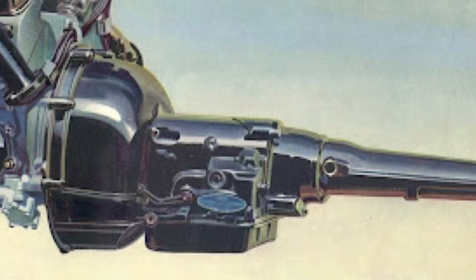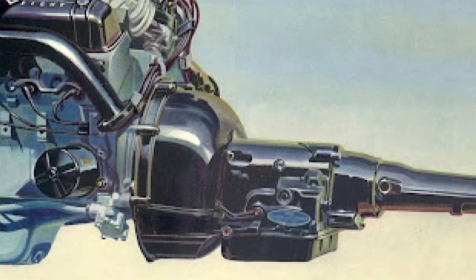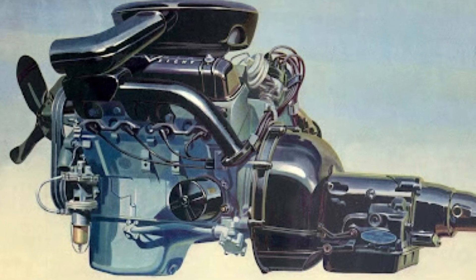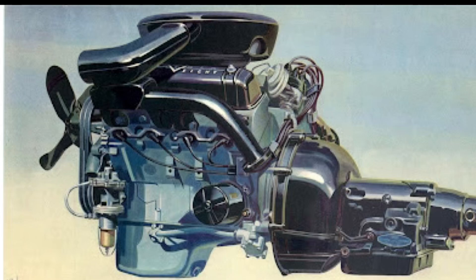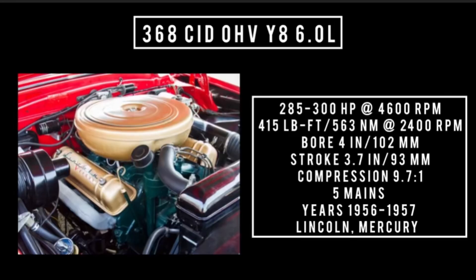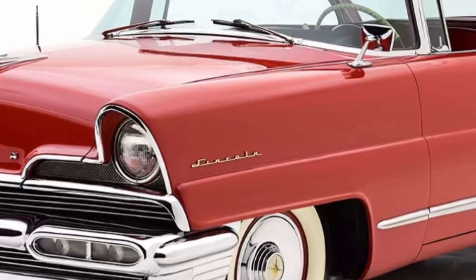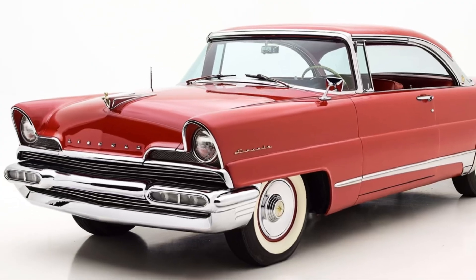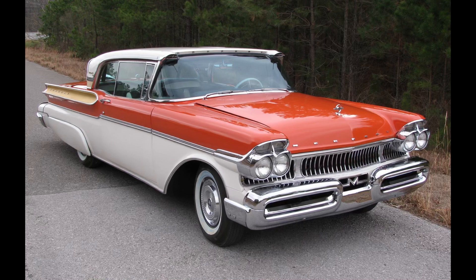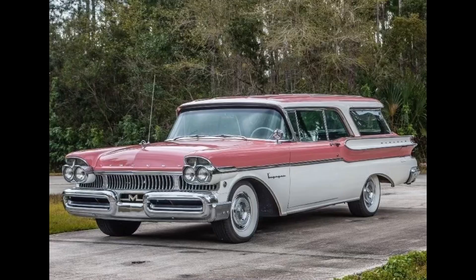In 1956 the 341 was bored for the final time to 4 inches, bringing displacement to 368 cubic inches — overhead valve Y-8, 6 liters. It's good for anywhere between 285 to 300 horsepower at 4,600 rpm, 400 pound-feet or 563 newton meters at 2,400 rpm, with a bore of 4 inches and a stroke of 3.7 inches. Compression was 9.7 to 1. Used from 1956 through 1957 in Lincolns, and in 1957 it was brought down to the Mercury Division — offered in the Turnpike Cruiser, Colony Park, Montclair, Monterey, Voyager, and Commuter.